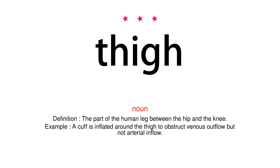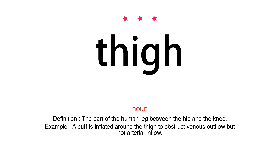Noun. Definition: the part of the human leg between the hip and the knee. Example: a cuff is inflated around the thigh to obstruct venous outflow but not arterial inflow.